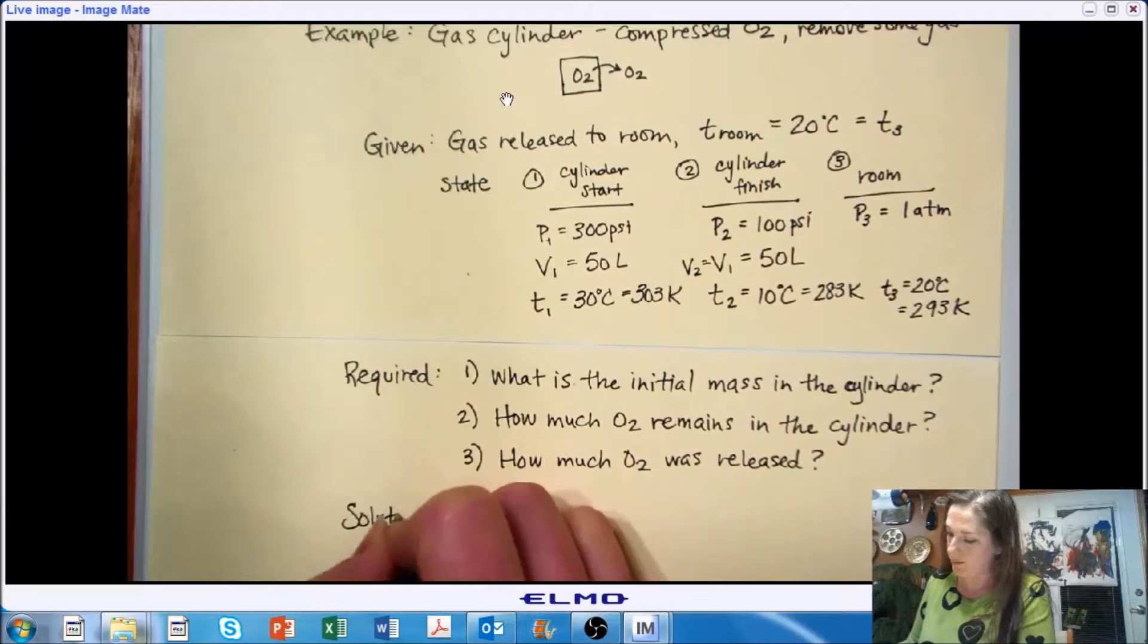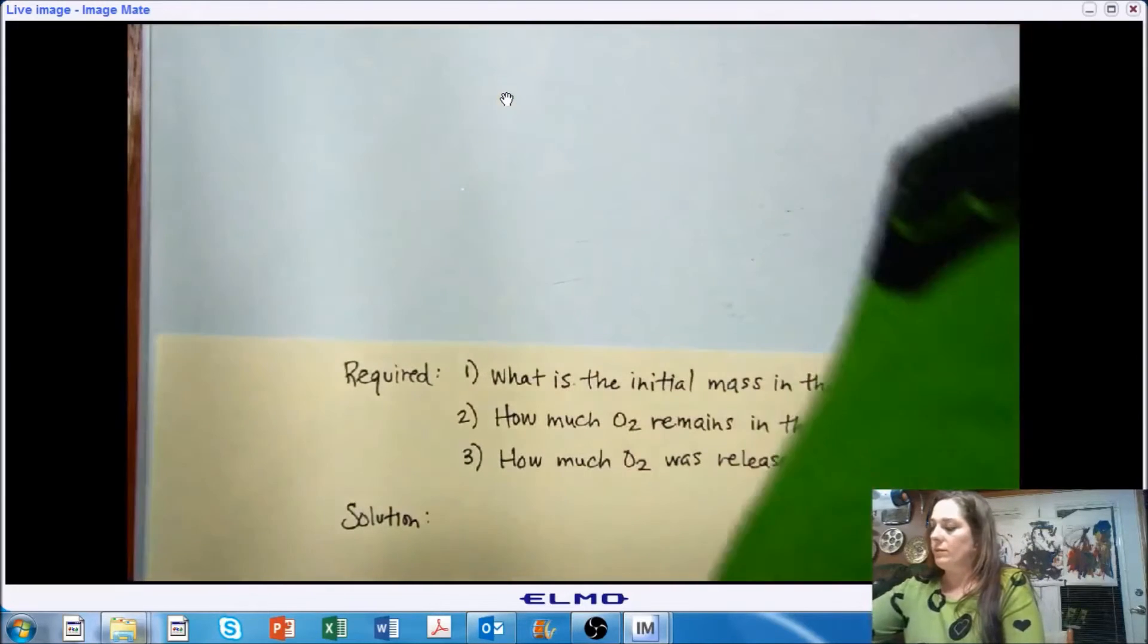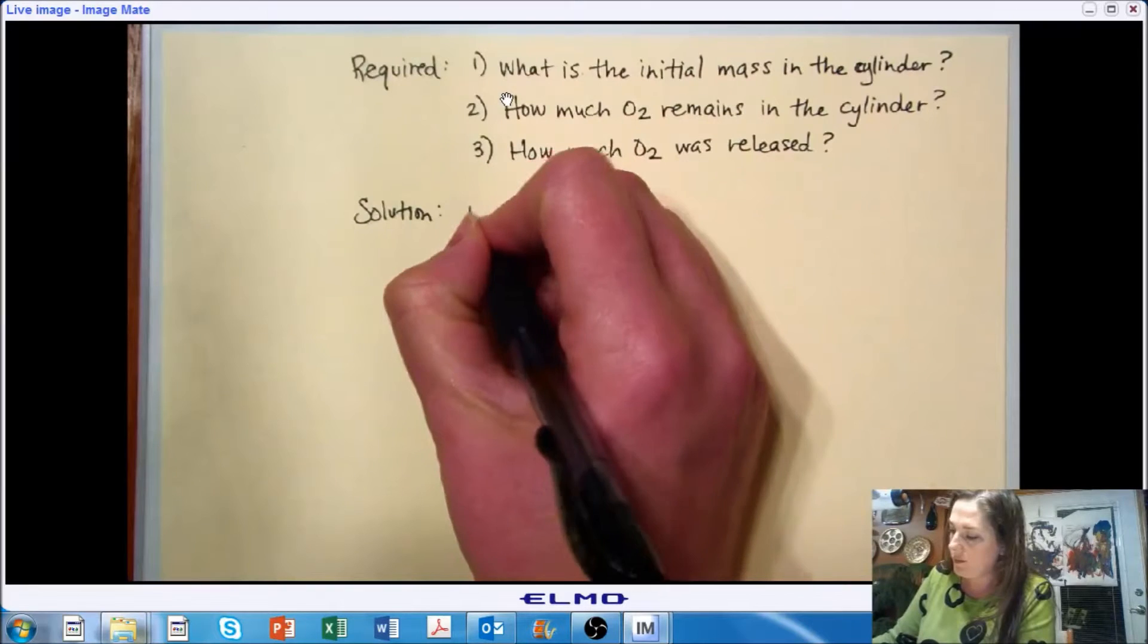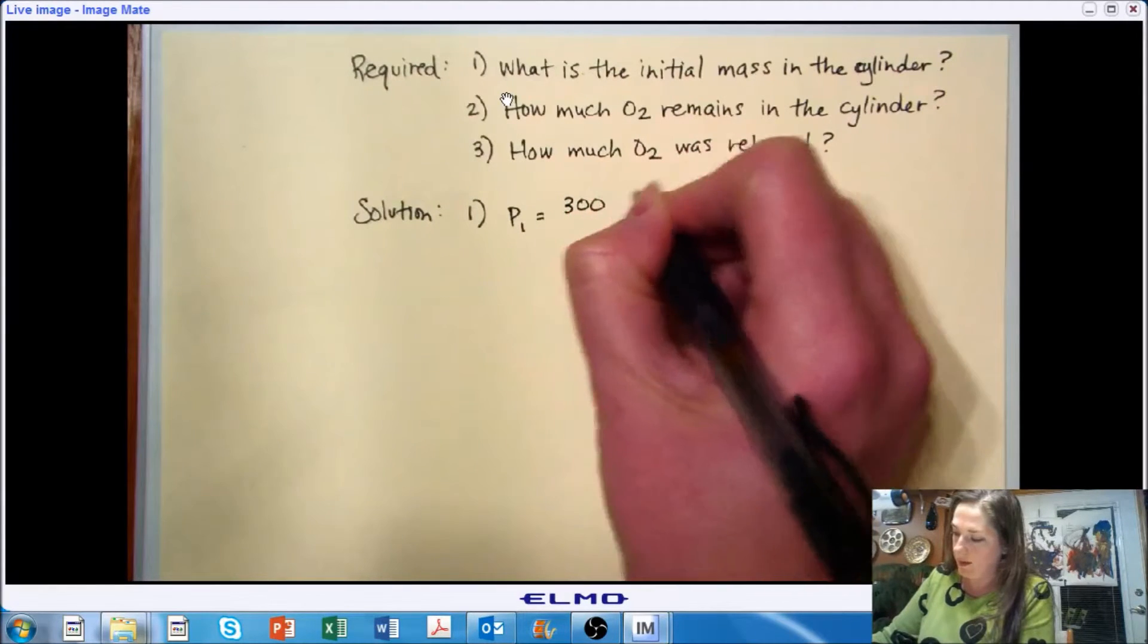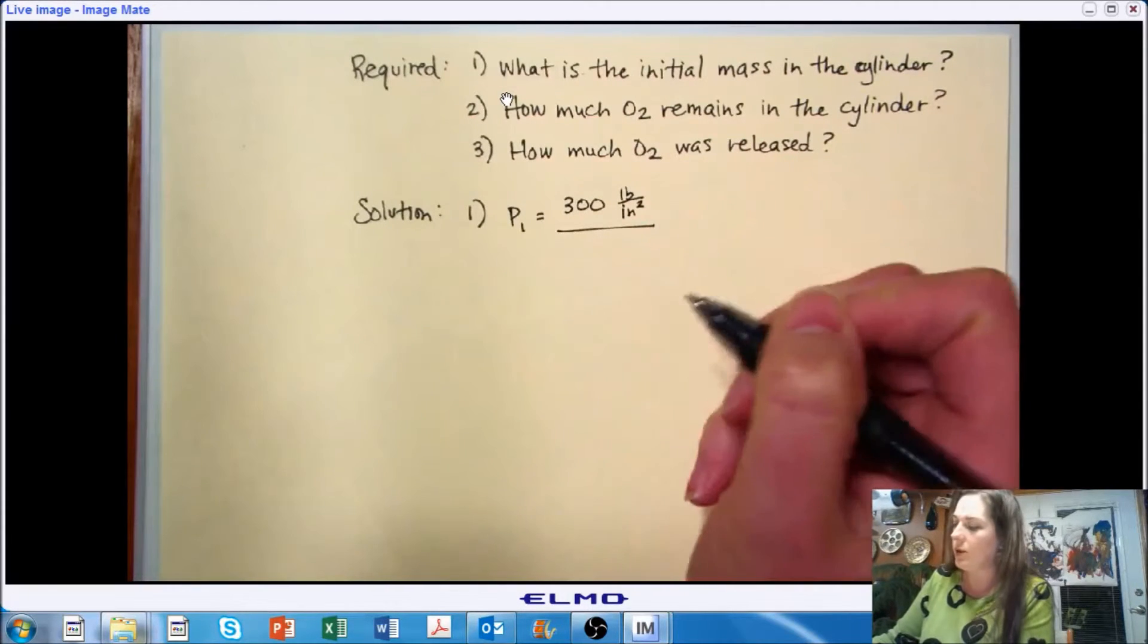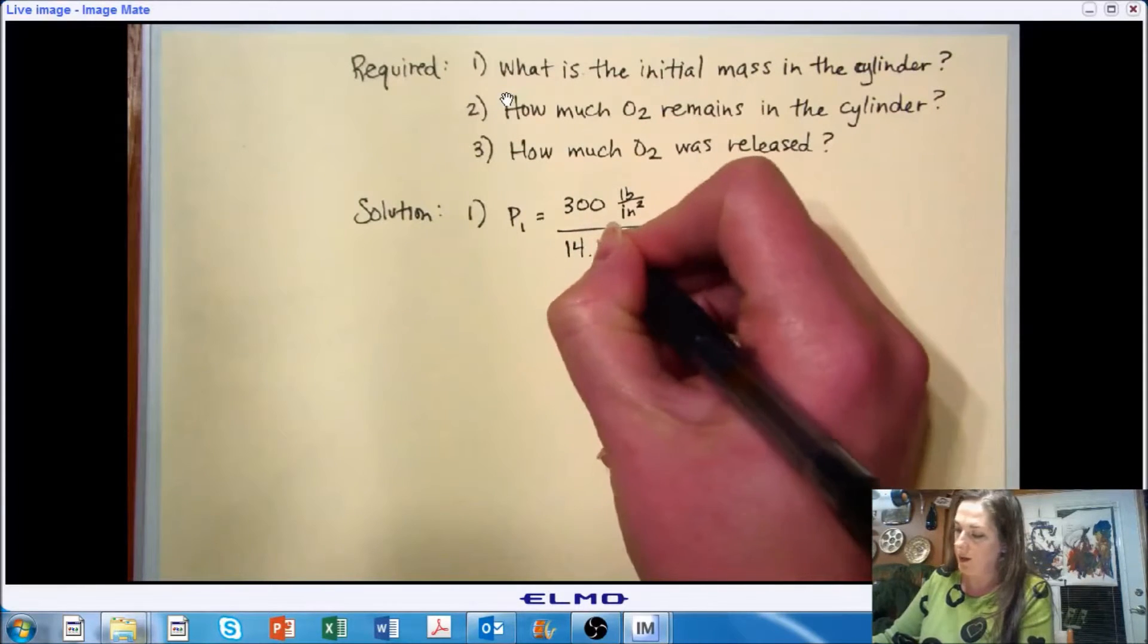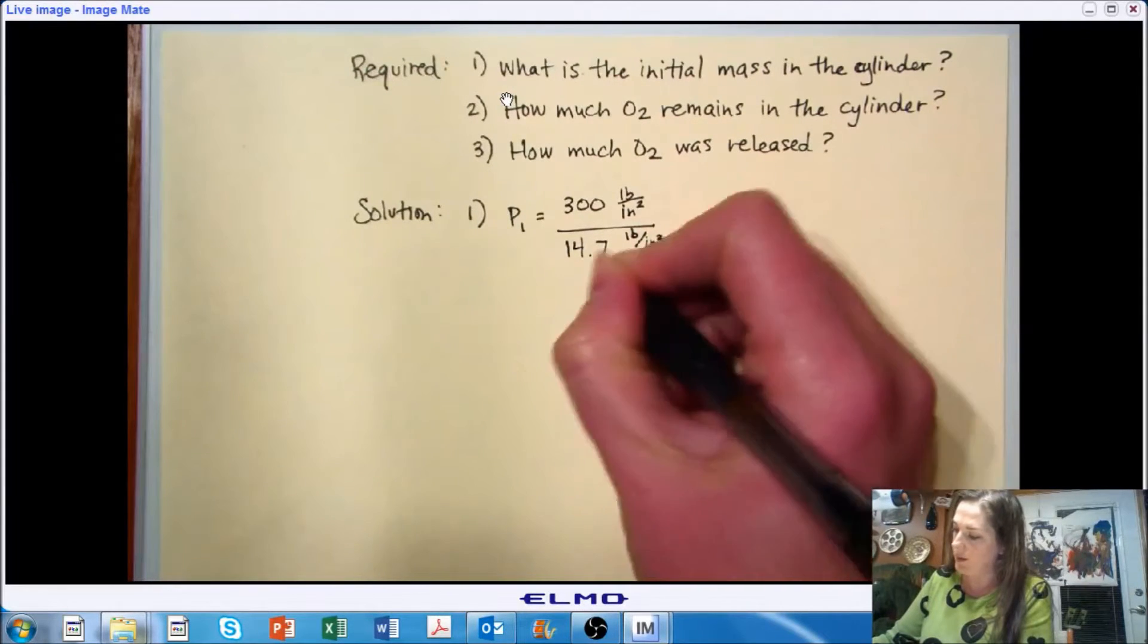Okay, so let's work on our solution. So we know that our starting pressure is 300 psi, and we need to convert that into, we need to make sure that all of our pressure units are in the same unit. So I've chosen to convert everything into atmospheres. And you'll see why in just a second. It's just for simplicity. So this is my conversion factor.